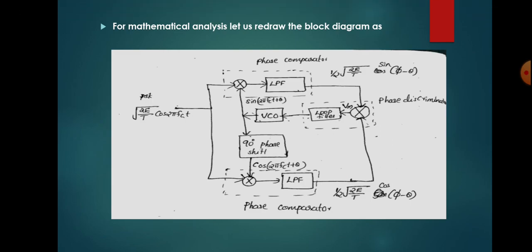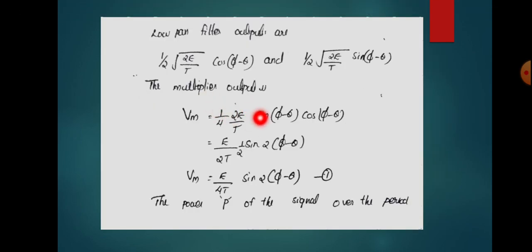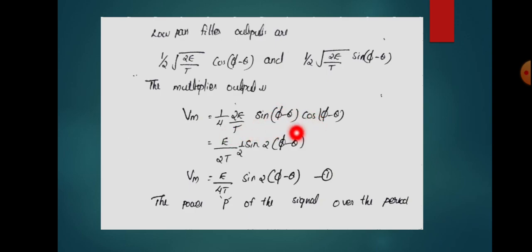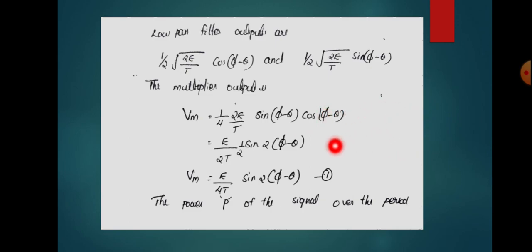We will be getting Vm. Vm is equal to (1/4)·(2E/T)·sin(φ − θ)·cos(φ − θ). After cancellation of common terms: E/(4T)·2·sin(φ−θ)·cos(φ−θ). Using the identity sin(2α) = 2·sin(α)·cos(α), we get Vm = (E/4T)·sin(2(φ − θ)). The low pass filter outputs are (1/2)·√(2E/T)·cos(φ−θ) and (1/2)·√(2E/T)·sin(φ−θ), and multiplying them gives the phase discriminator output.